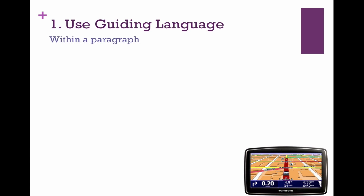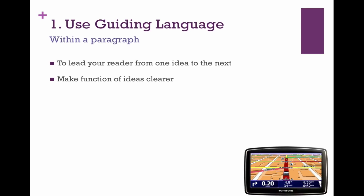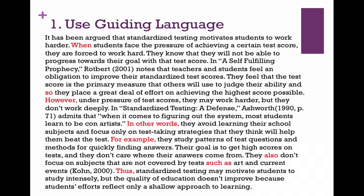The first technique is using guiding language within a paragraph, and it's how you lead your reader from one idea to the next. As you develop your body paragraph, you look at the kinds of information you need to develop the idea of the paragraph, and you want to make it so that the functions of those ideas are very clear to your reader. Grammar is going to come into play for this to work. Let's take a look at this example where I have a couple of different moves or areas where I have to build cohesion between my ideas.